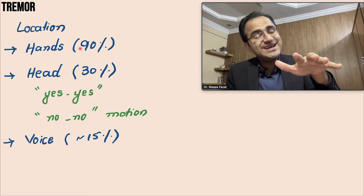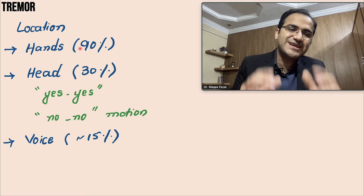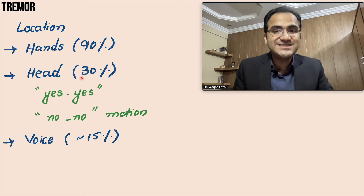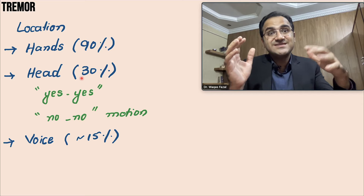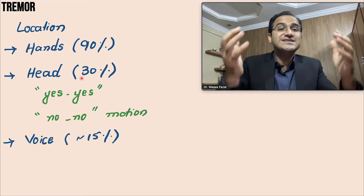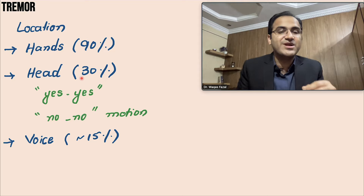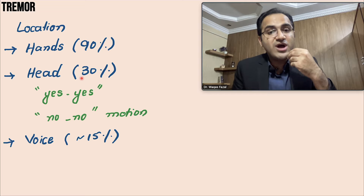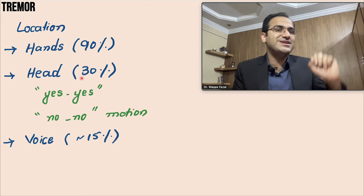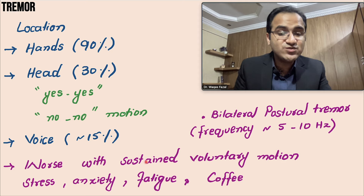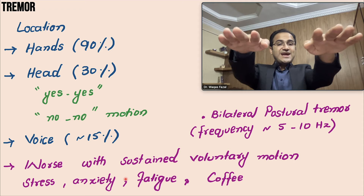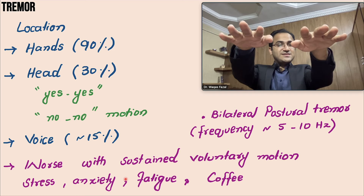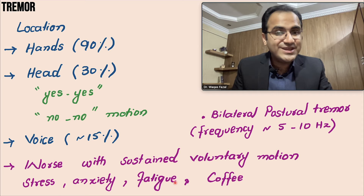The tremor improves when the person drinks alcohol — this is the classical presentation of essential tremor. It can also be present in the head, with a yes-yes or no-no motion. It can be exaggerated when the patient feels the tremor is being noticed by others. The tremor may also be present in the voice. Essential tremor is worse with sustained voluntary action, stress, anxiety, fatigue, and caffeine. It is a bilateral postural tremor with a frequency of 5 to 10 Hz.